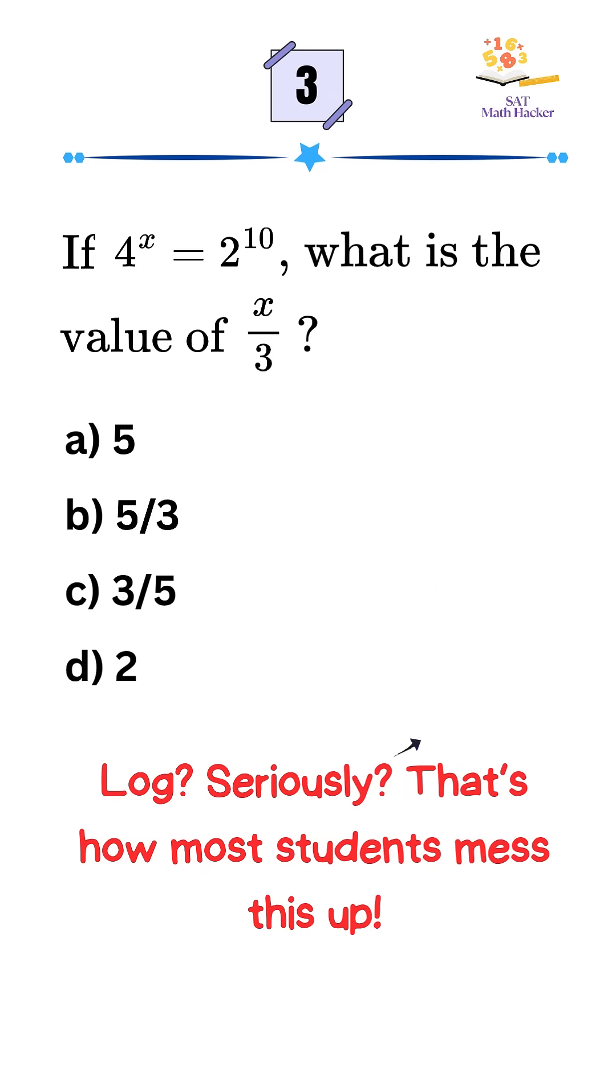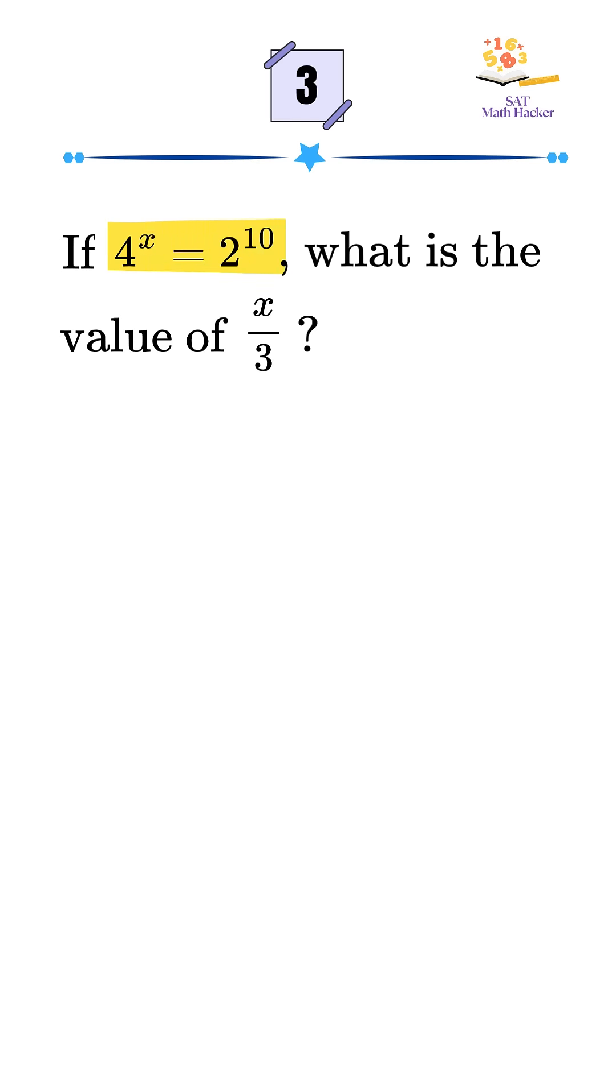This SAT math question looks easy, but it tricks students. You're given that 4 to the power x equals 2 to the power 10 and asked to find the value of x divided by 3.